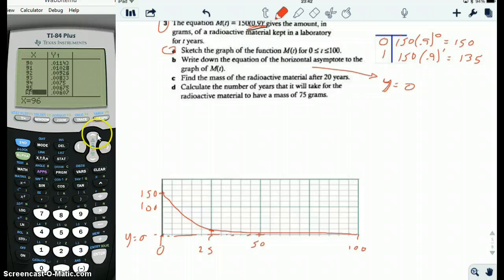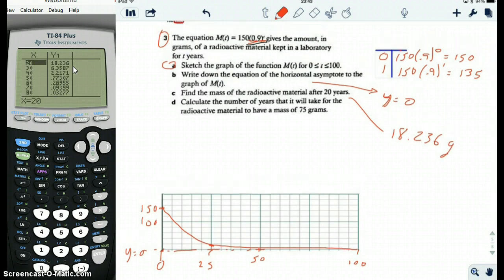So, find the mass of the radioactive materials after 20 years. We could do this with the calculator or with the graph, I mean with the table or with the graph. I'm just going to change the delta here because it's easier if we just change it to jump by tens, right? So now we can check 20 years pretty quickly. The amount of radioactive material after 20 years is 18.236 grams.